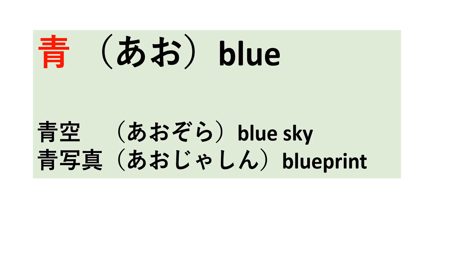Let's start with ao, which means blue. The examples of this kanji are: aozora, which means blue sky, and ao jashin, which means blueprint.